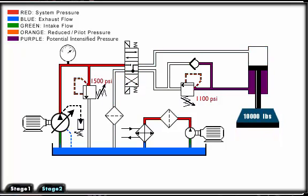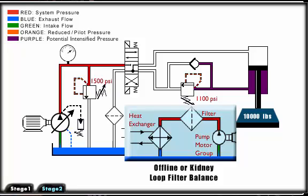Now let's examine more closely the components that make up this system. First we'll look at the offline or kidney loop filter circuit. This circuit consists of a pump motor group, a filter, and an air to oil heat exchanger.